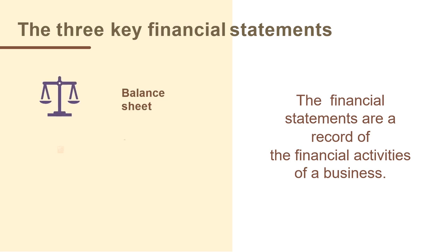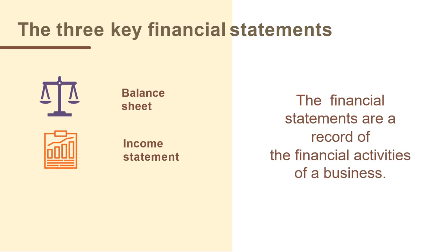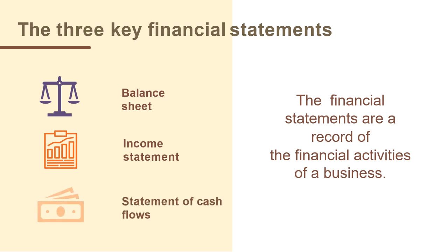Financial statements are where Warren Buffett mines for companies with the golden durable competitive advantage. The financial statements are a record of the financial activities of a business and tell him if he is looking at a mediocre business or a company that has a durable competitive advantage that will bring him exceptional returns. The three key financial statements are the balance sheet, the income statement, and the statement of cash flows.